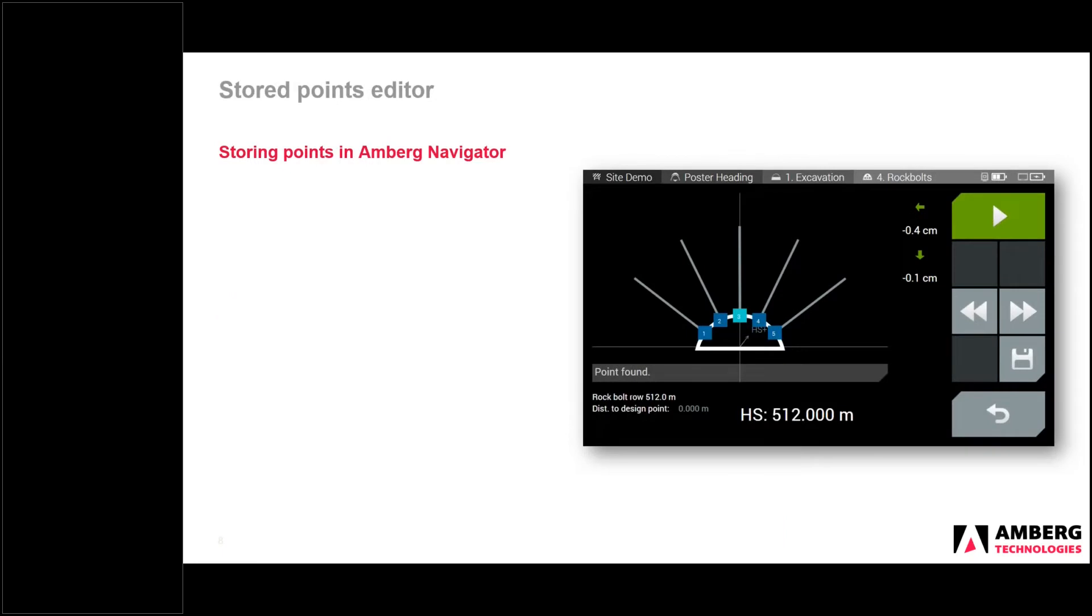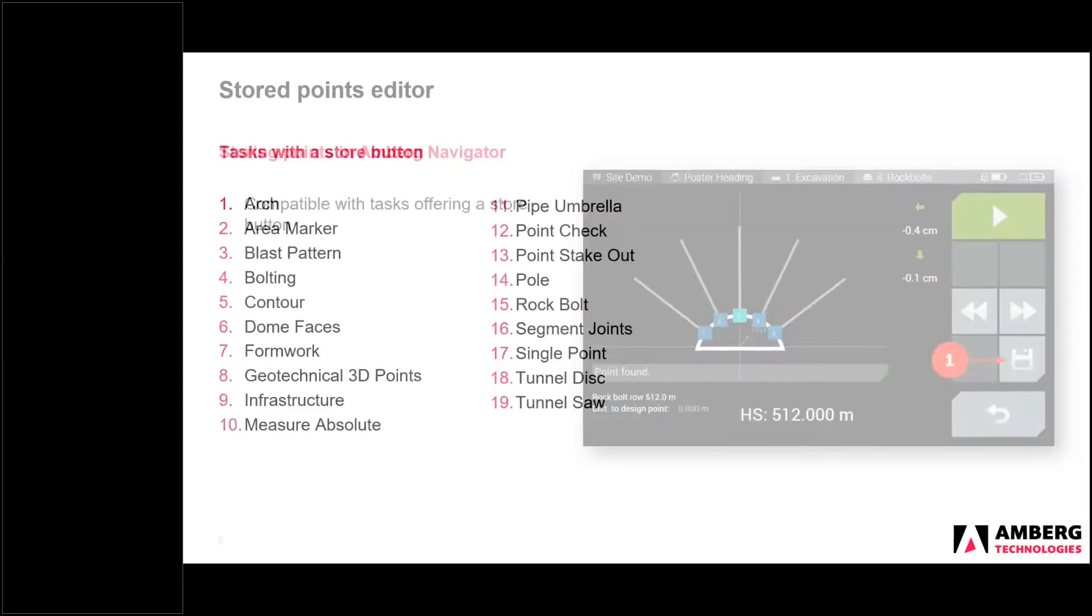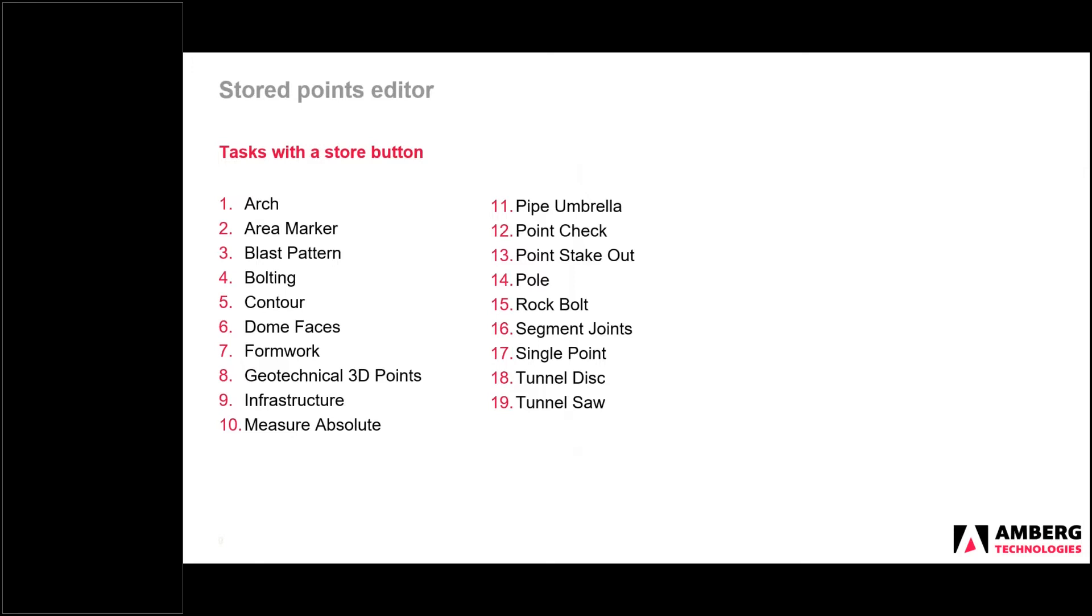Just a little background. In Amberg Navigator, we have many tasks that have a store button. This is the button you see here, and this particular example is the Rock Bowl task. But this store button is available in many of our tasks. We have at least 19 tasks, such as these ones you see here, where we can save single-point measurements. Previously, to obtain this information from the data collector, from the tablet, you needed to manually copy the CSV file from the tablet. The data was organized by Navigator task type, but you needed to manually retrieve this information and take it back to the office and then you could work with the data there.